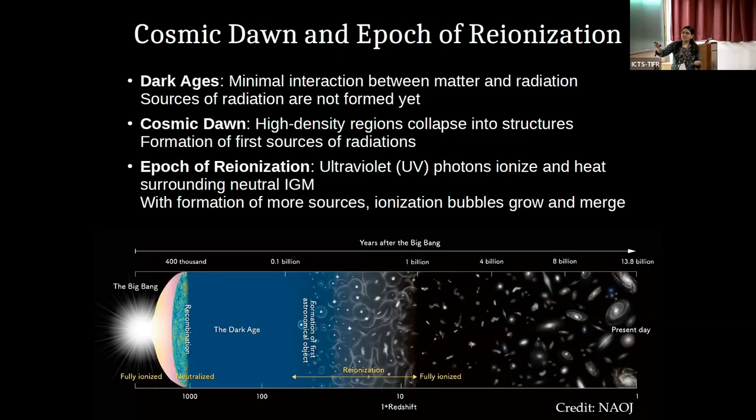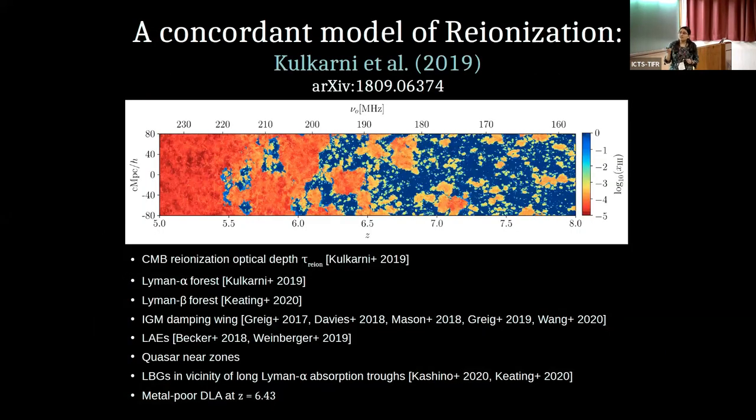But this is a very brief, very inaccurate cartoon picture because we have very few observational probes to study this time period, especially dark ages and cosmic dawn. So to understand what actually took place, what were the sources and how they ionize, we turn to the simulations. In our work, we have used this model of simulations given by Kulkarni et al in 2019. And this simulation is in agreement with a lot of indirect probes of the ionization state of the IGM at lower redshifts.